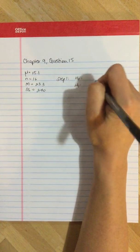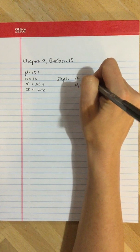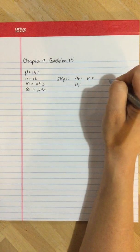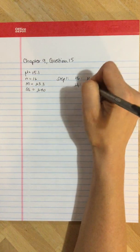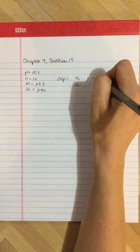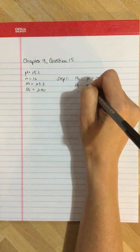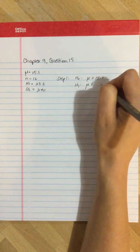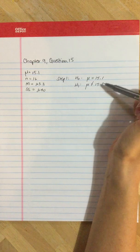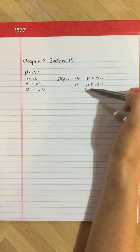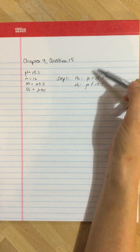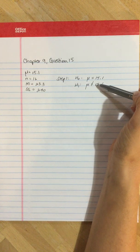The null is that there is no difference from the 1950s, so mu equals 15.1. The alternate is that mu isn't equal to 15.1. These are mutually exclusive and exhaustive, they're two-tailed, and we always write our hypotheses in terms of expected population values.